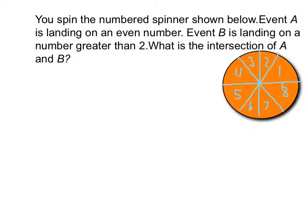So the first thing you should do is underline important parts. I'd underline event A and an even number. And then I'd also underline event B and greater than 2. And I'd circle intersection because that's what it's looking for.